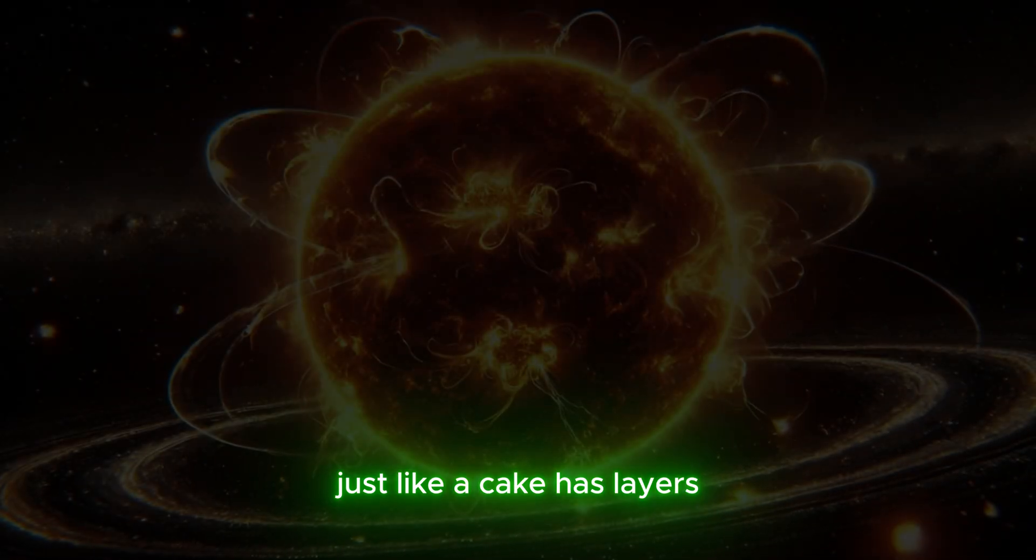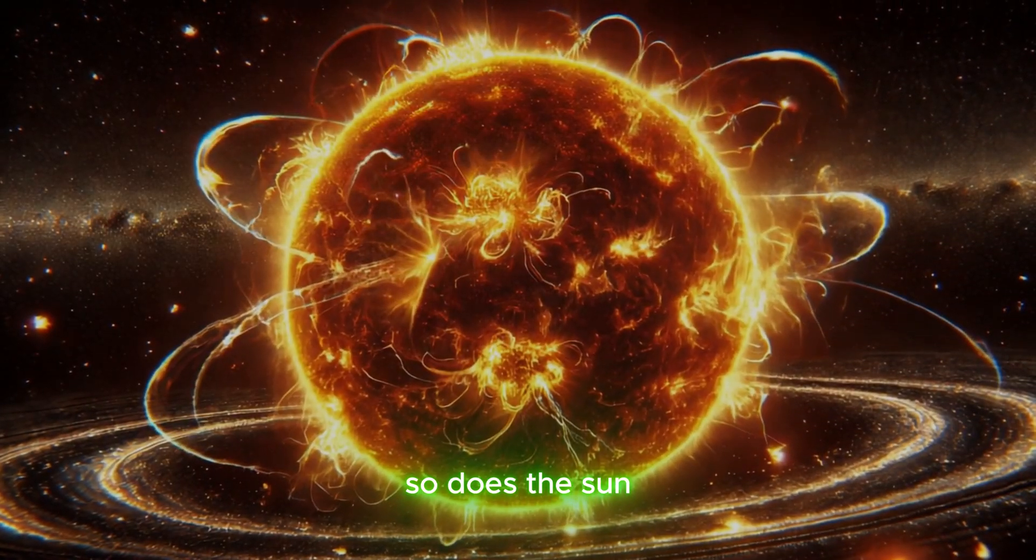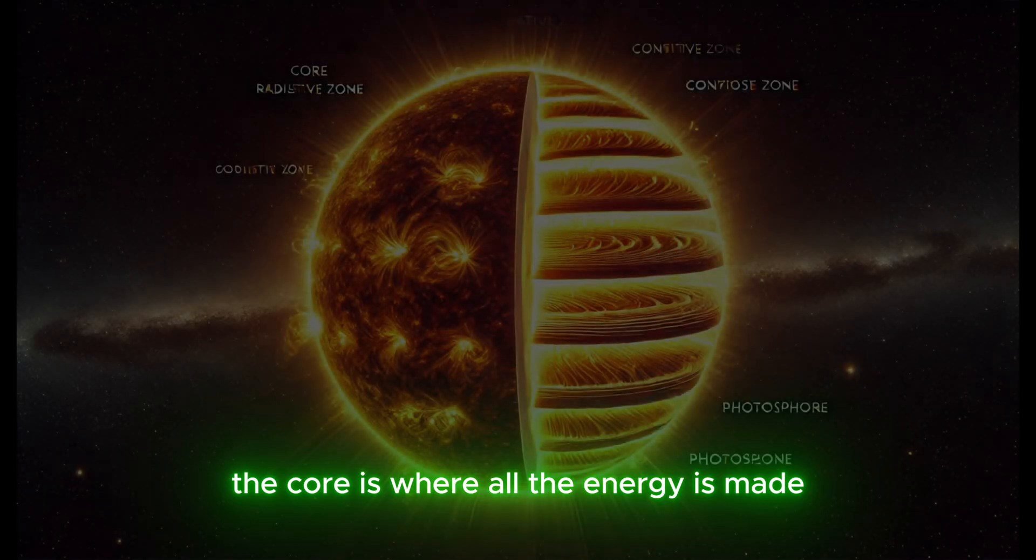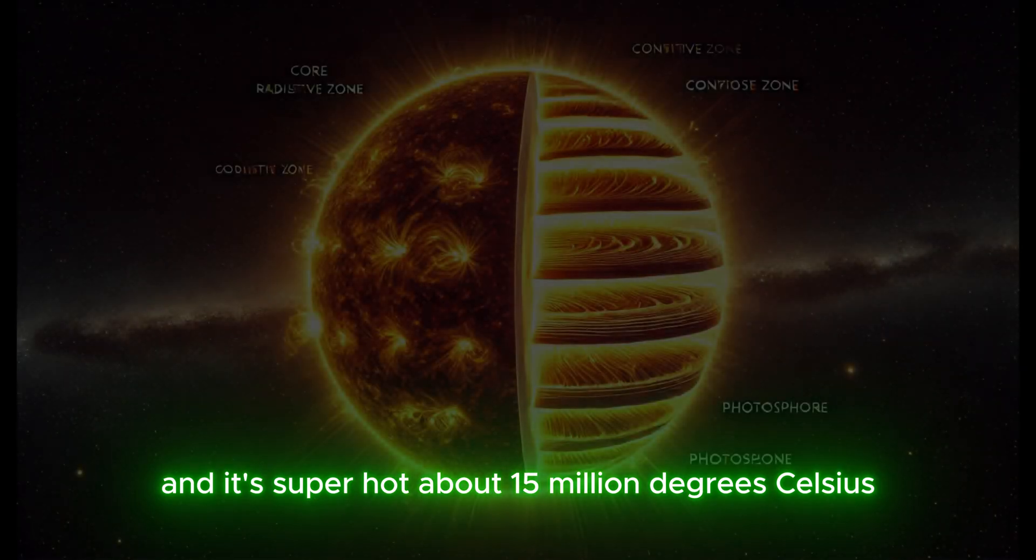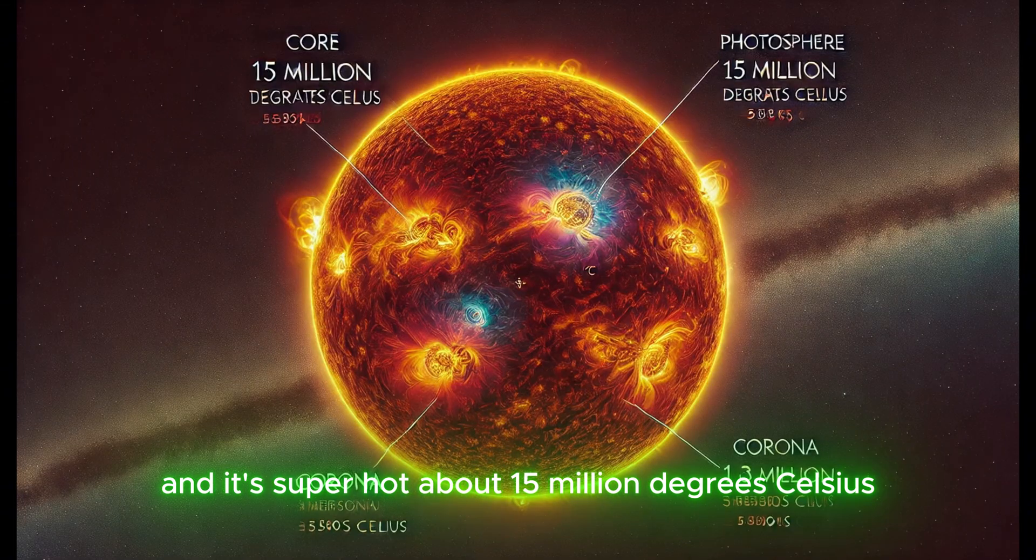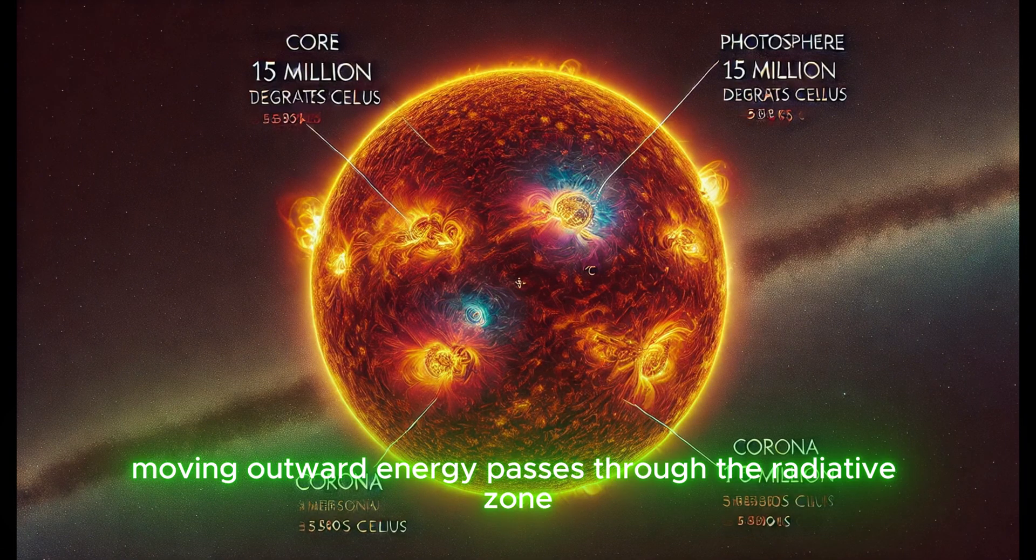Just like a cake has layers, so does the sun. The core is where all the energy is made, and it's superhot, about 15 million degrees Celsius.